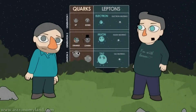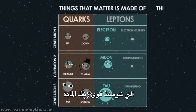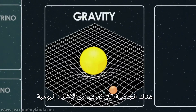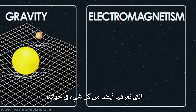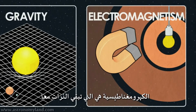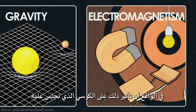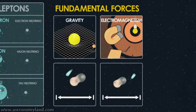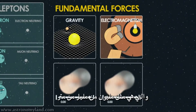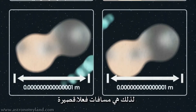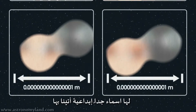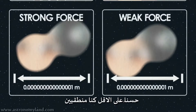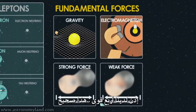Now we're done, right? No. Those are the things that matter is made of. We still have to talk about the things that mediate the forces between matter. There are four known fundamental forces: gravity, which we know from everyday stuff; electromagnetism, which we know from everything in our lives - magnets, electricity, light. Electromagnetism is also what holds atoms together, and it's mostly why the chair you're sitting in doesn't fall apart. Then there are two other forces that are very short-range, only acting over the width of an atomic nucleus - about a millionth of a billionth of a meter. We call them the nuclear strong force and the nuclear weak force.